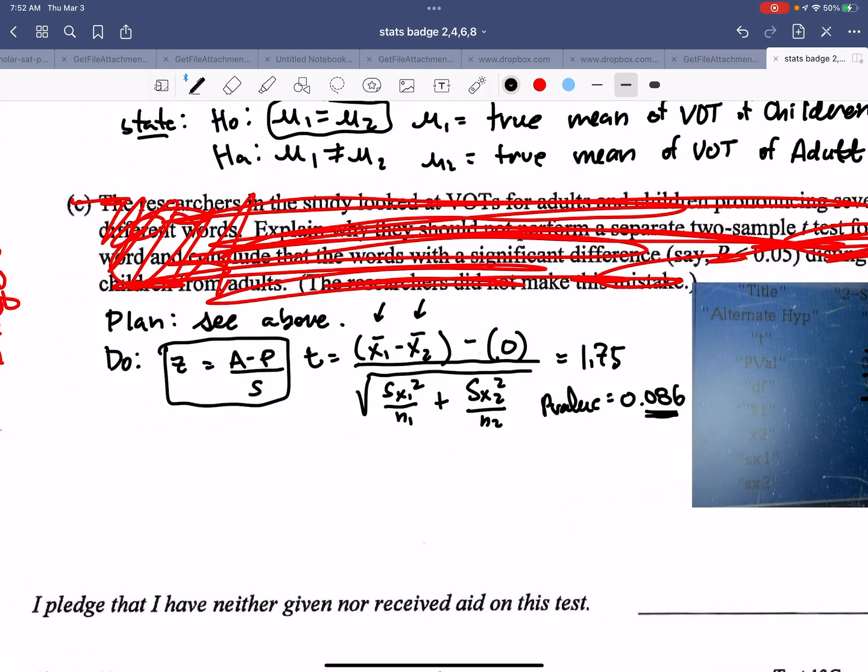Just to wrap up here. We're ready to conclude, right? Because our P value of 0.086 is greater than 0.05, we fail to reject H0.